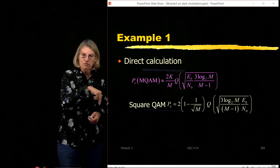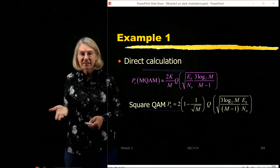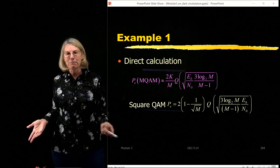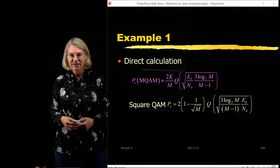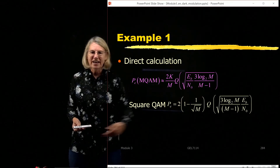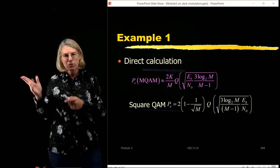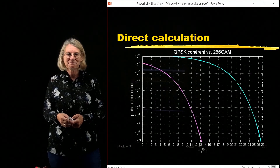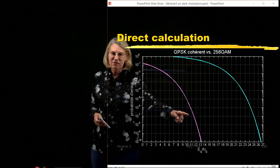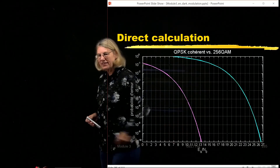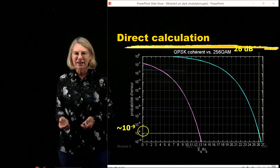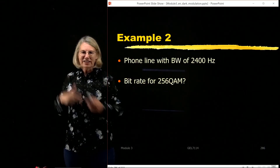I showed you the curve approach because it can be very handy if you have a plot but not MATLAB. But if you have MATLAB, you can go directly to the equation. For M equal to 256, you can plug that in and do it directly from MATLAB. The other way can be quicker if you have a plot. If I plot directly the curve for 256 QAM alongside QPSK in MATLAB, we can see right there the loss we were talking about. Putting in 26 dB, I get 10^−9 — both methods give the same result.